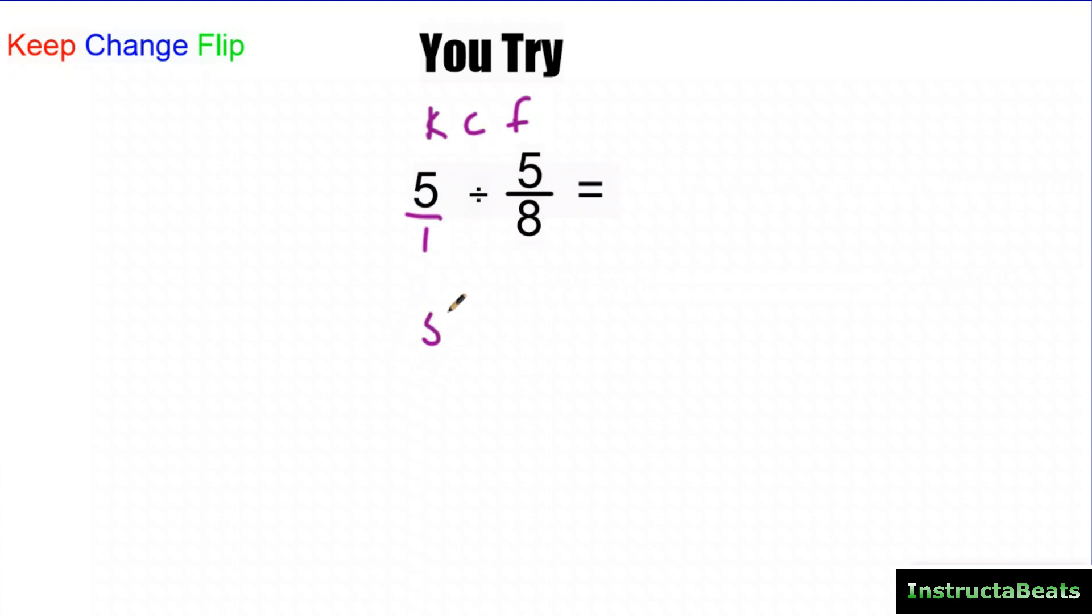All right. So five over one, we're going to keep it. See the division sign and change its name. We're going to flip five eighths to its reciprocal of eight fifths. And now we're going to multiply across and we get 40 fifths. Okay. And when we do 40 divided by 5, right? Because really this fraction is a division equation. So really it's saying 40 divided by 5.